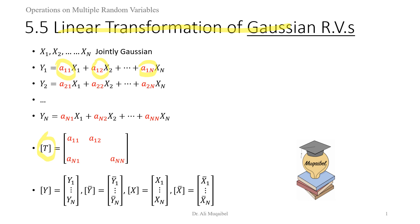We can define four different vectors. The first one, vector Y, is the vector of the output random variables. Y-bar is the average of the output random variables. X is the input random vector, and X-bar is the vector of the averages of the input random variables. We are doing a transformation from X to Y using the linear transformation T. The question is: what is the PDF of Y and how do we find it?